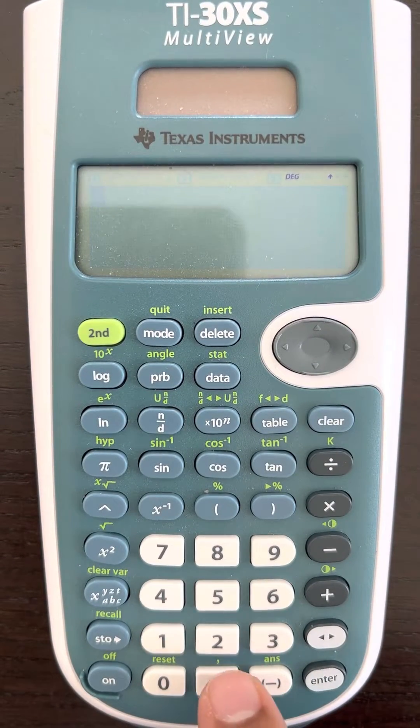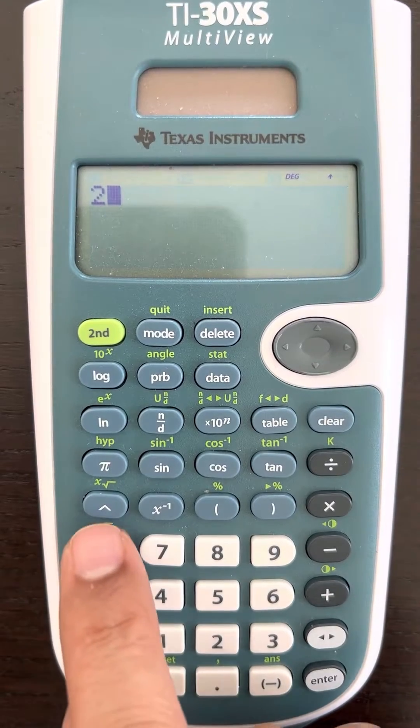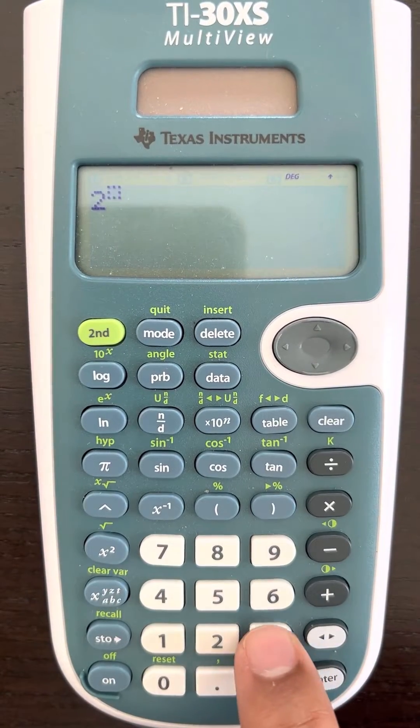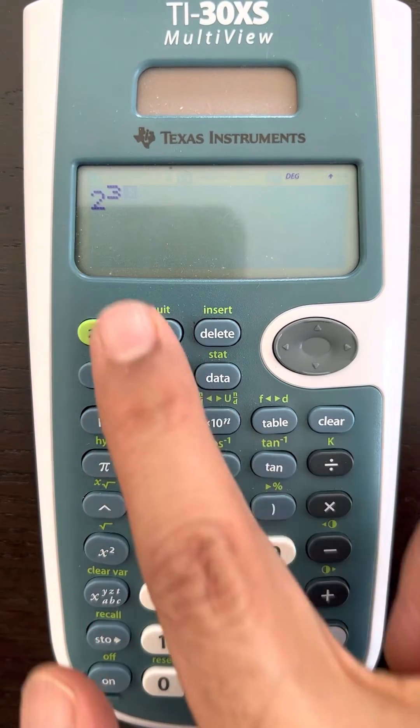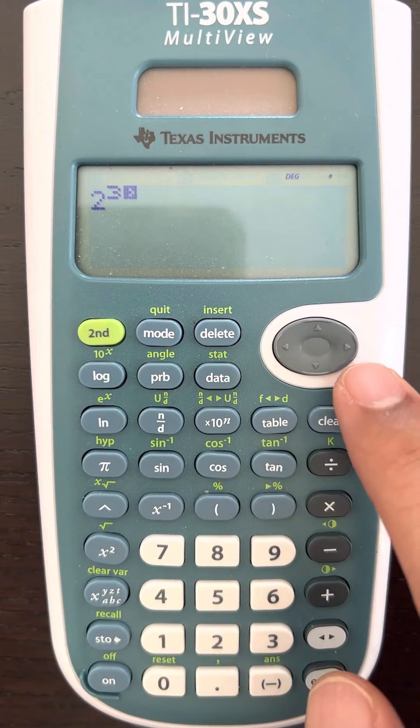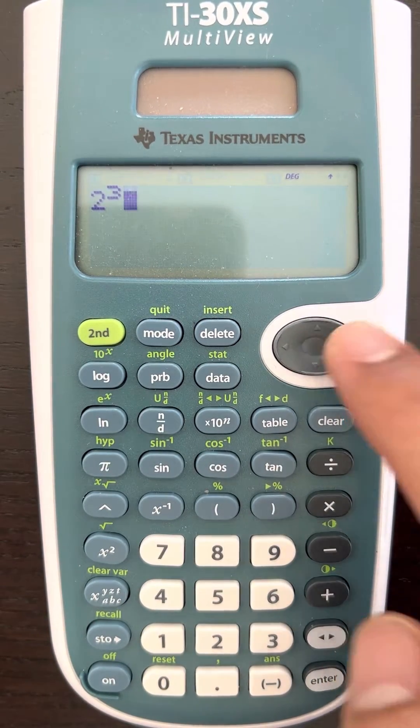Let's say I'm going to use 2 raised to the power 3, and then I want to bring the cursor down. So I have to press this.